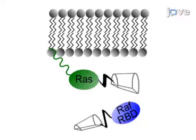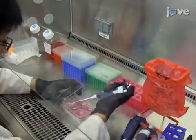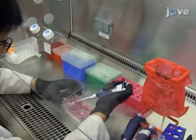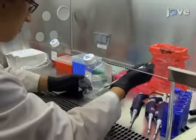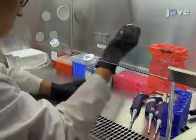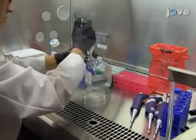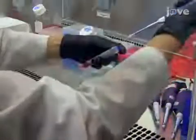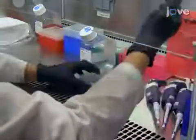After cloning RAS and RAF RBD PAM CHERRY1 fragments, packaging into viral particles, and infecting U2-OS cells according to the TEX protocol, to prepare a sample for imaging, plate about 5.5 times 10 to the 4th stable expression cells per well of an 8-well glass-bottom chamber slide in 350 microliters of phenol-red-free DMEM.